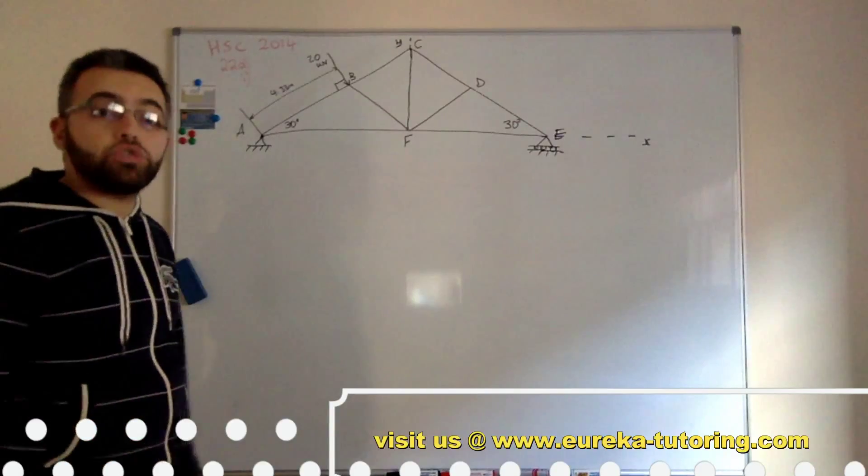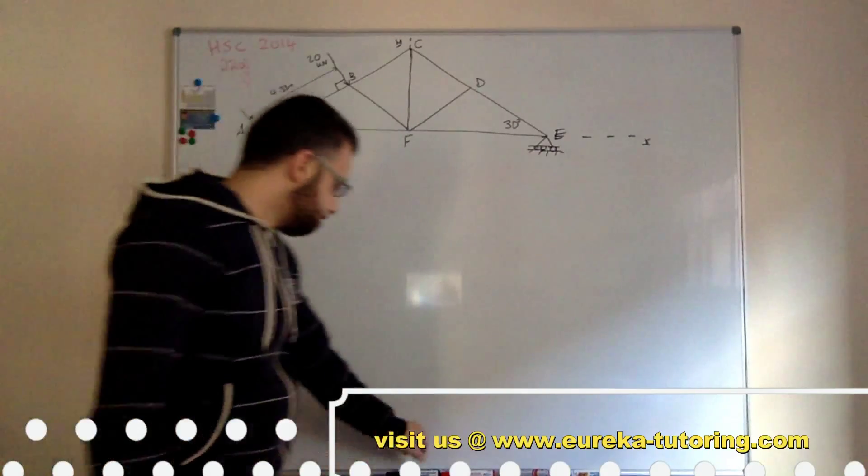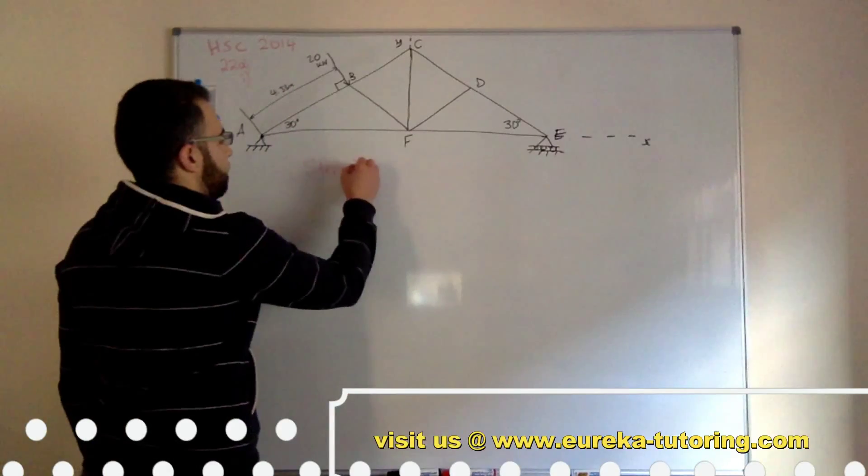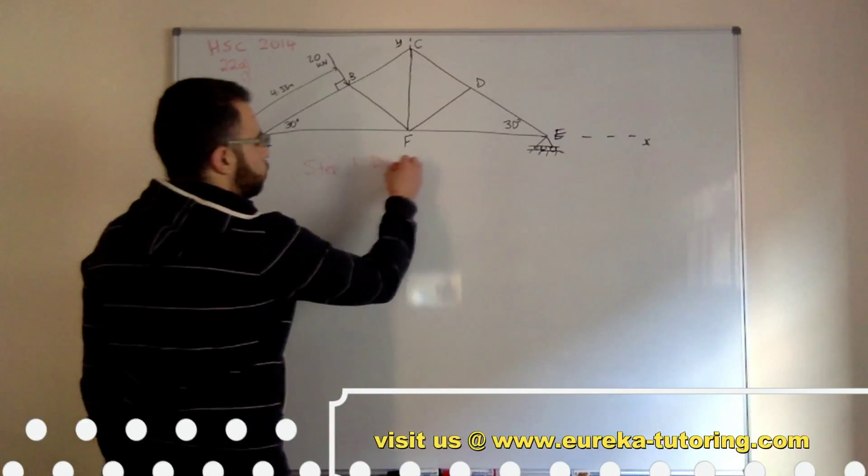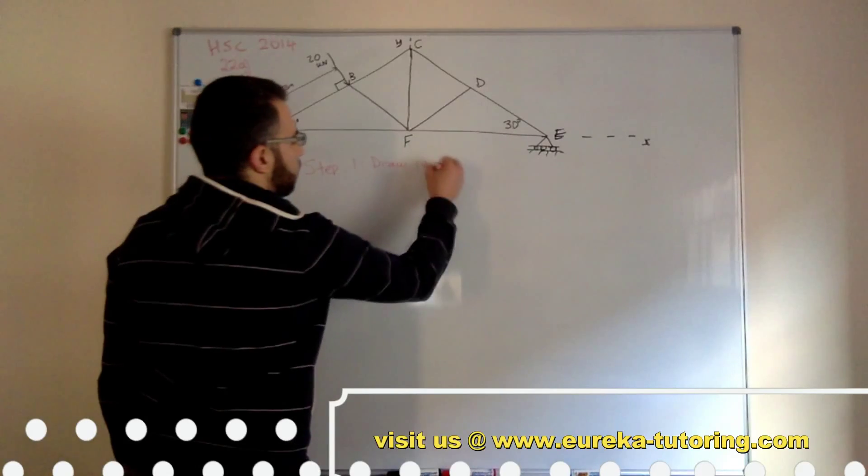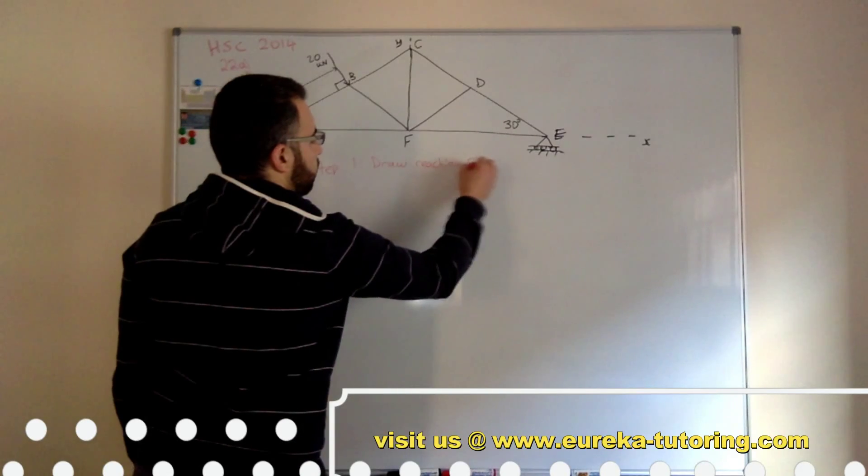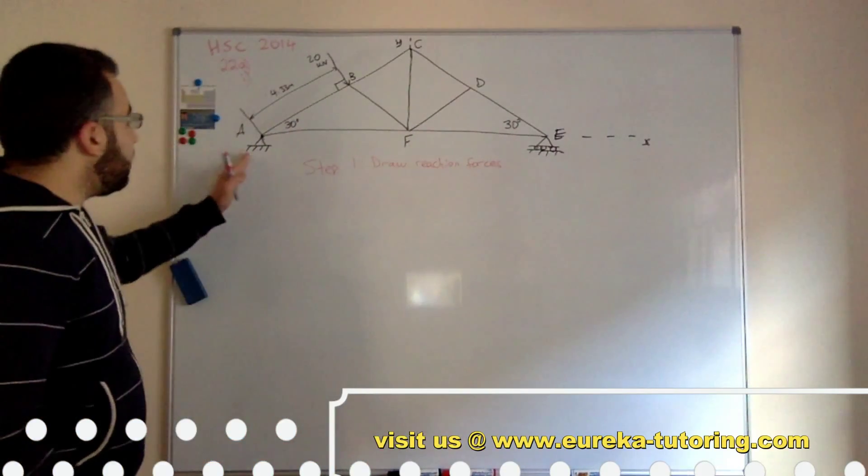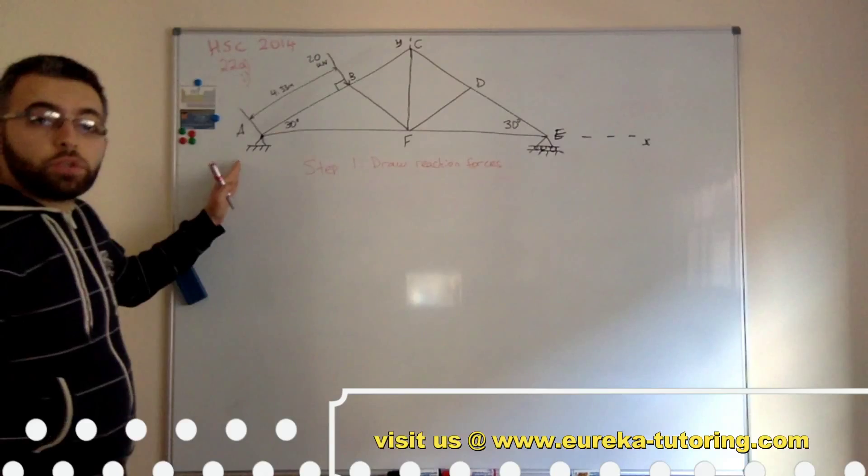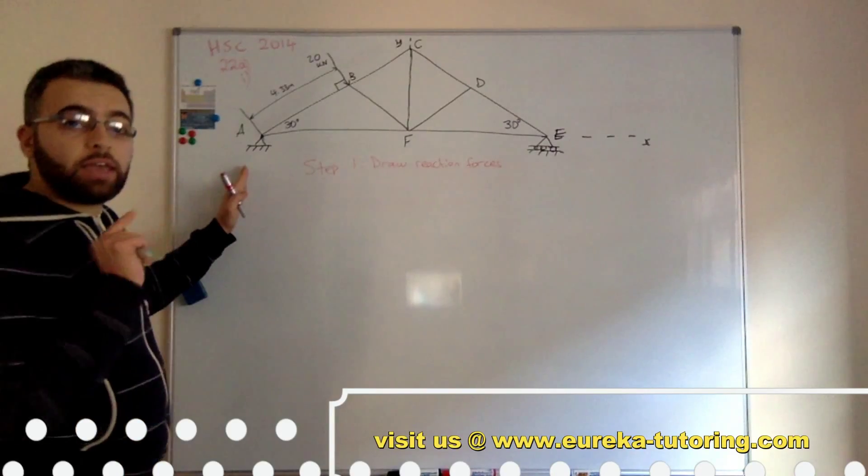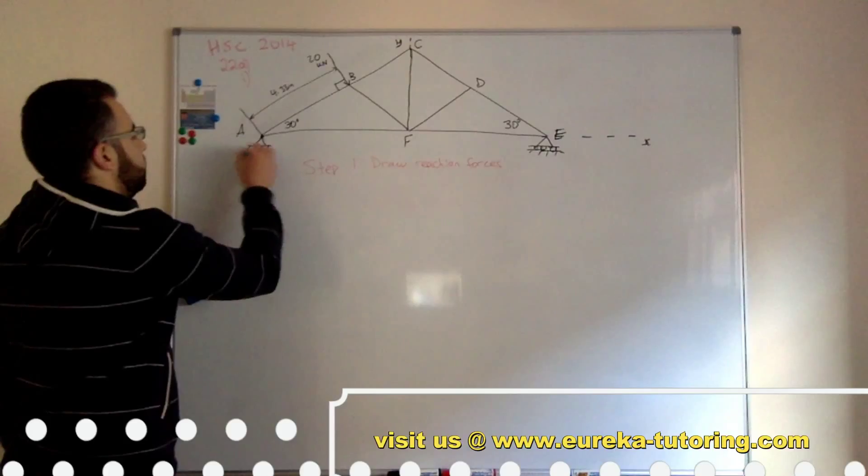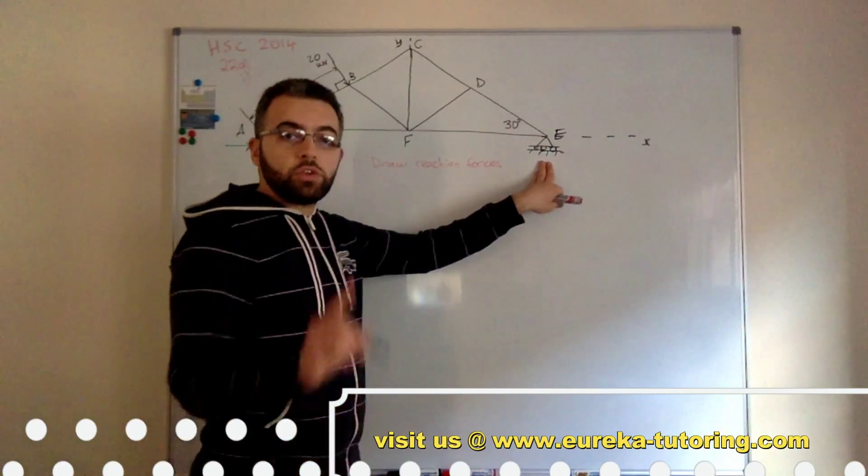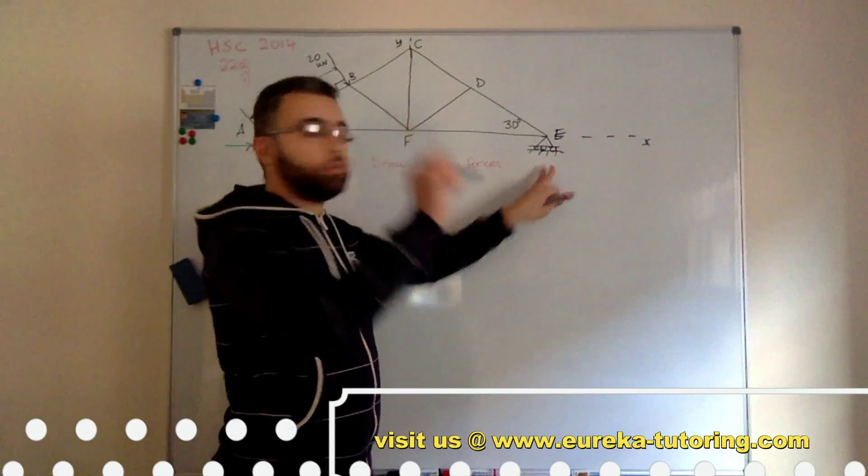Now the first step is to draw the reaction forces. So in step 1, draw reaction forces. We see that A is a pin joint, so with pin joints there's a vertical force and a horizontal force. And E, it's a roller joint, so there's only one force which is the vertical force only.